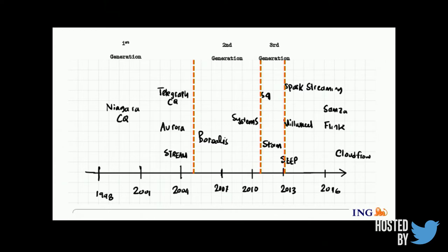The third generation focused on scalability and high performance with robustness towards faults — Storm is one of the most popular frameworks from that generation. In the fourth generation, the focus shifted to deriving exact results. Fourth-generation stream processors provide expressive abstractions, richer window specifications, and support highly available operation. They also introduced features like transactional processing — for instance, Flink recently provided streaming ledger support, which enables ACID transactions on top of a stream processor.